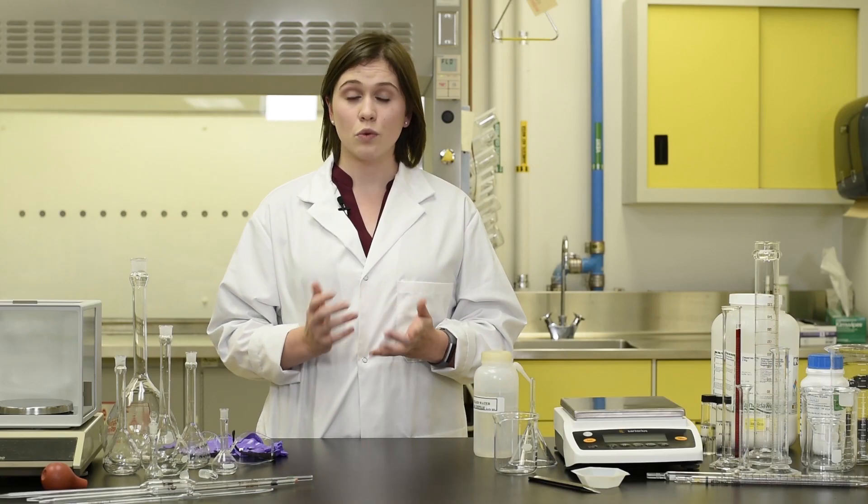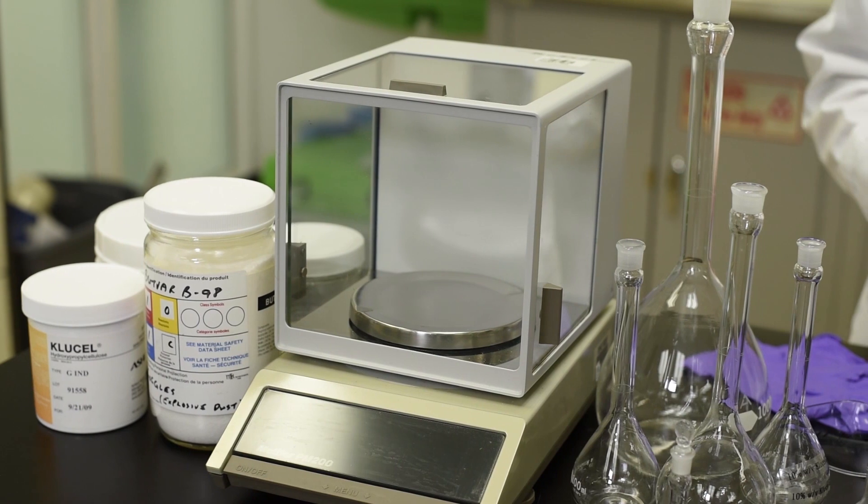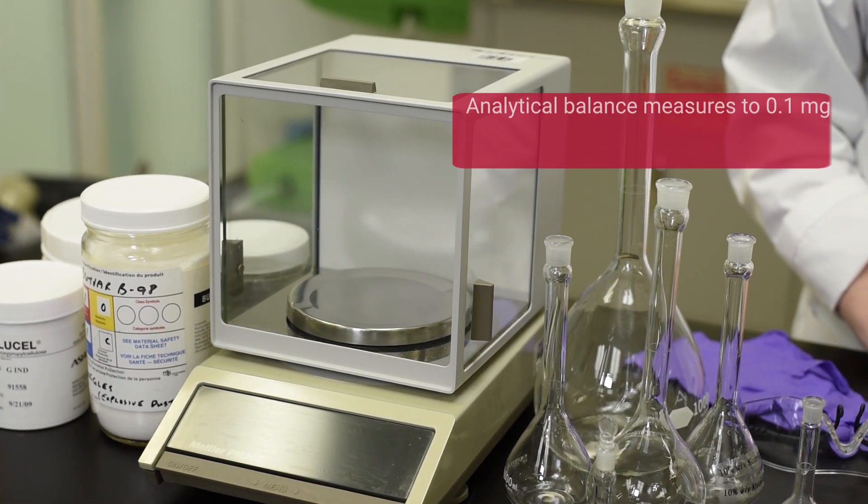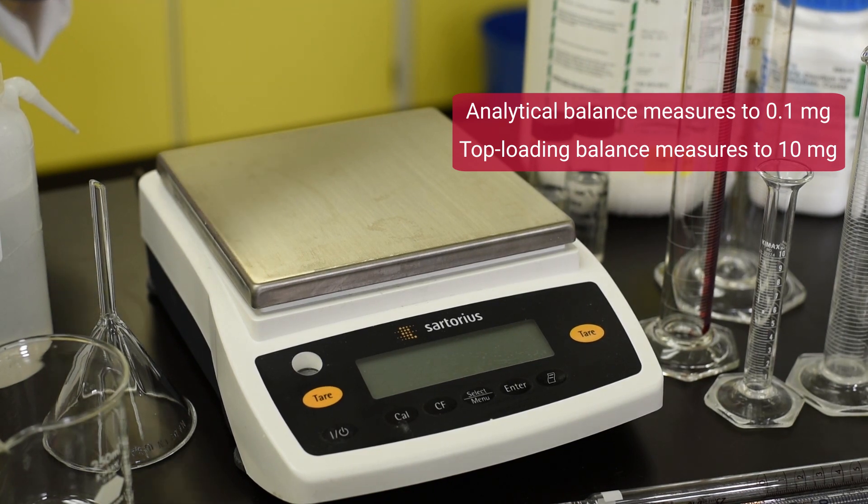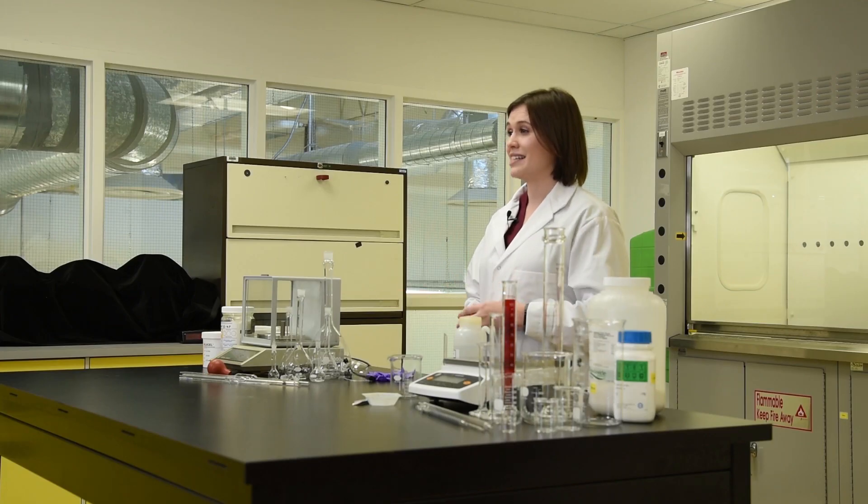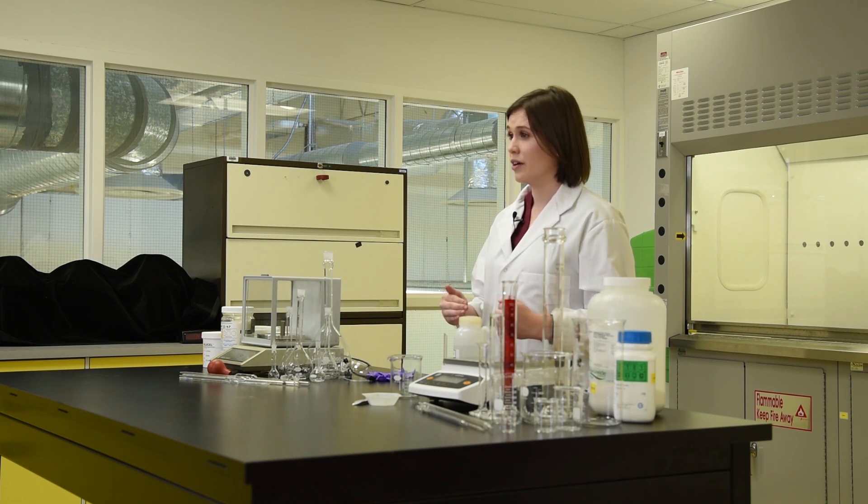When it comes to weight measurements, analytical balances like the one here are more precise than top-loading balances. This analytical balance can measure to 0.1 milligrams, whereas this top-loading balance can be used to measure to 10 milligrams. An analytical balance is best for situations requiring a high degree of accuracy and precision, for example when creating standards for desalination measurements.